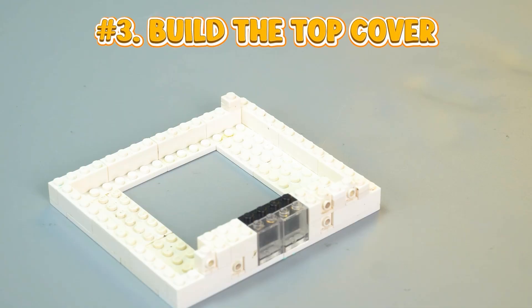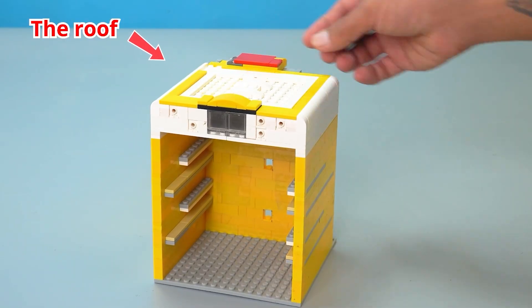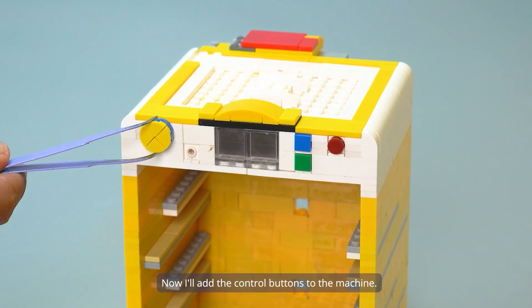Number 3, build the top cover. The roof. Now I'll add the control buttons to the machine.